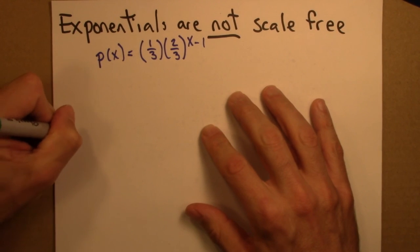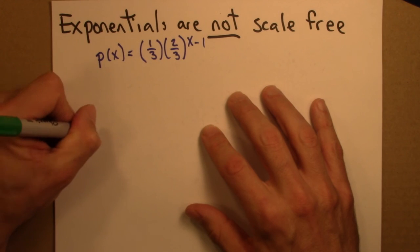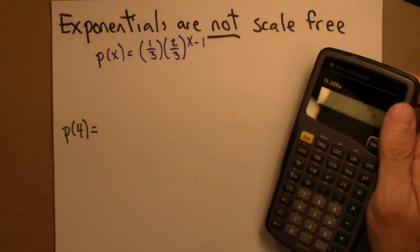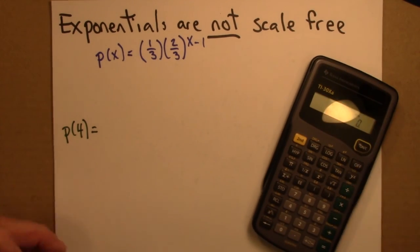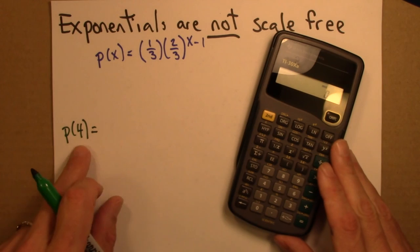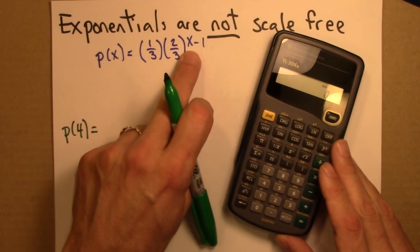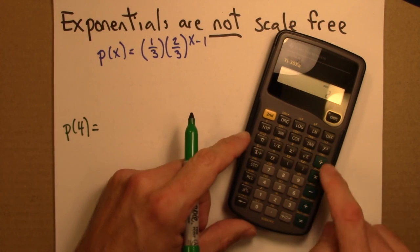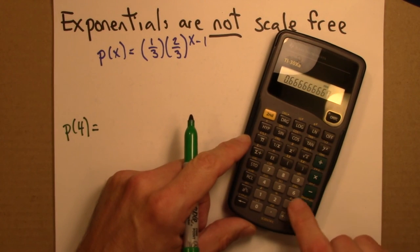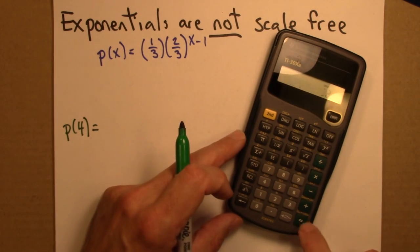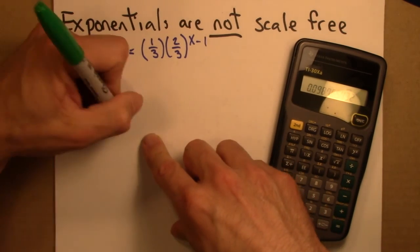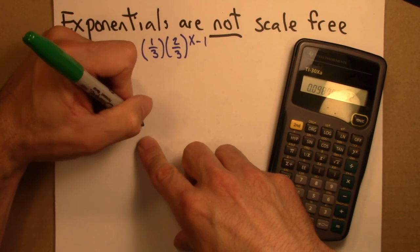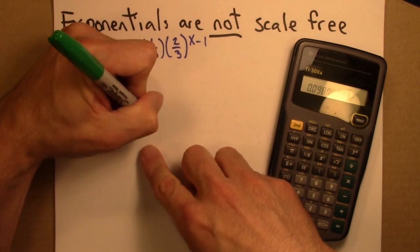And we can say, alright, what about P(4)? What is the probability that a branch has length 4, or that, in a particular piece of paper, it takes me 4 times to toss it into the can? Alright, so I can just plug 4 in here. 4 minus 1 is 3, so I've got 2 thirds cubed times a third. And I get 0.0988.